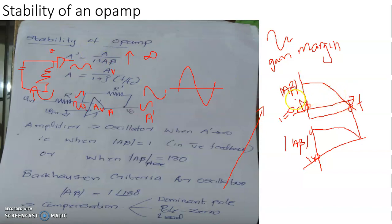The value of the magnitude of A beta at a frequency at which the phase angle of A beta is 180 degrees is referred to as gain margin. If the gain margin is positive, then the amplifier is potentially unstable. If the gain margin is negative, then the amplifier is potentially stable. This is the concept of gain margin and this is how the parameter can be used to predict the stability of an amplifier.